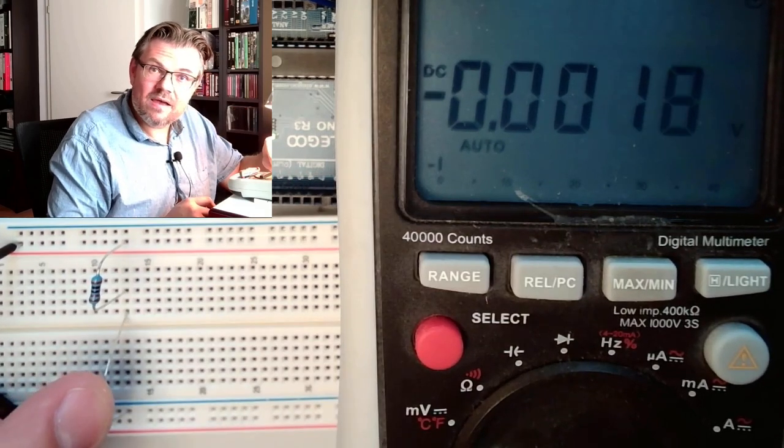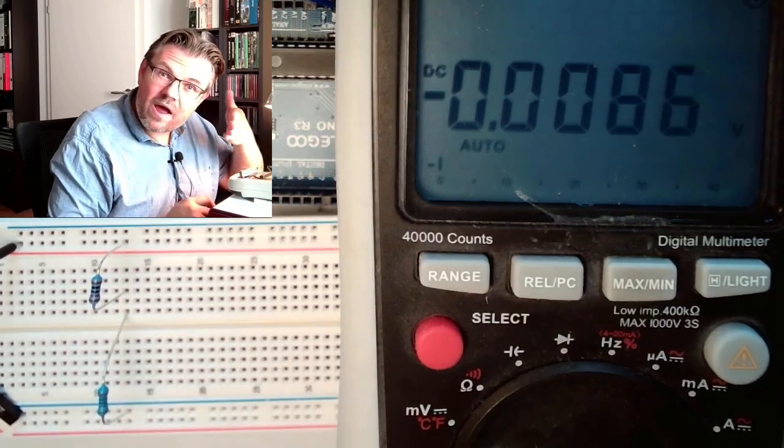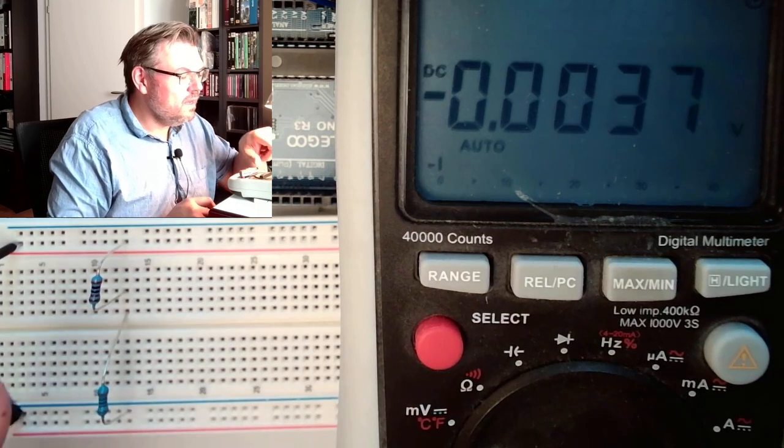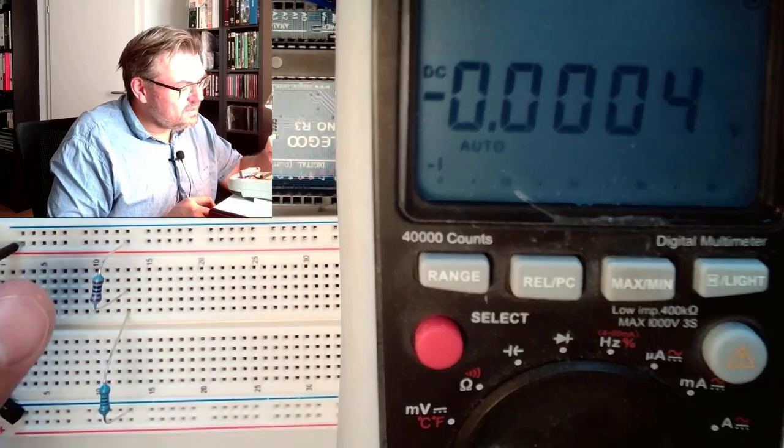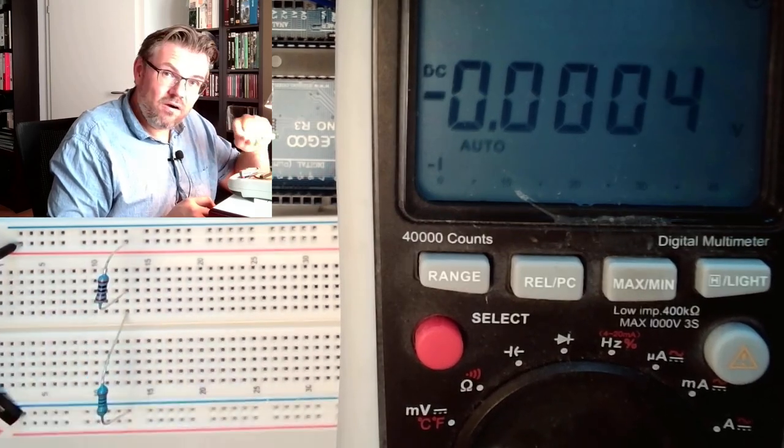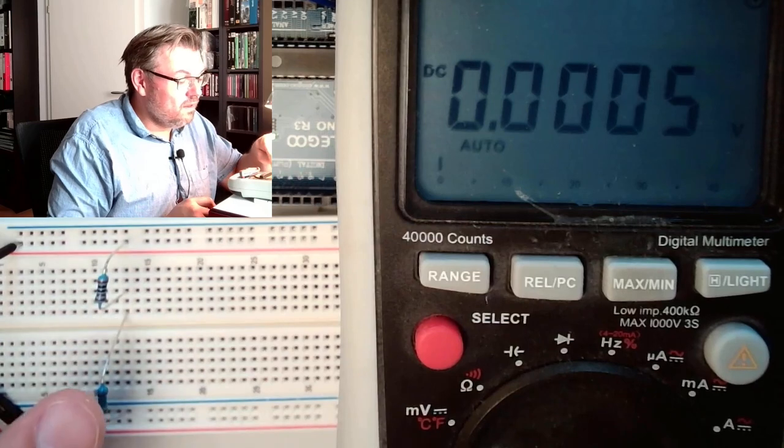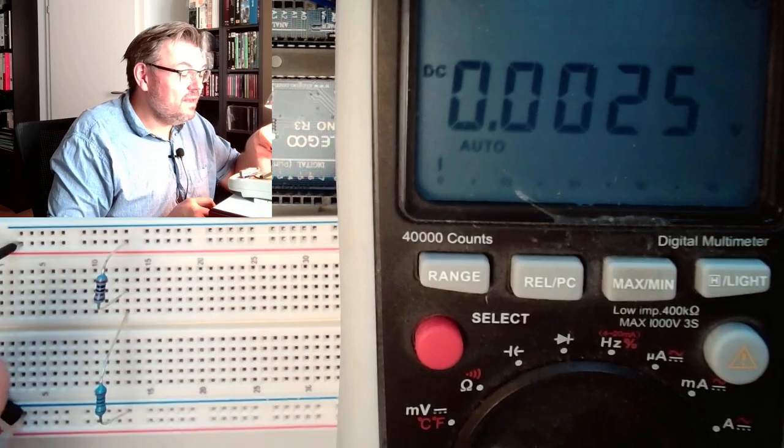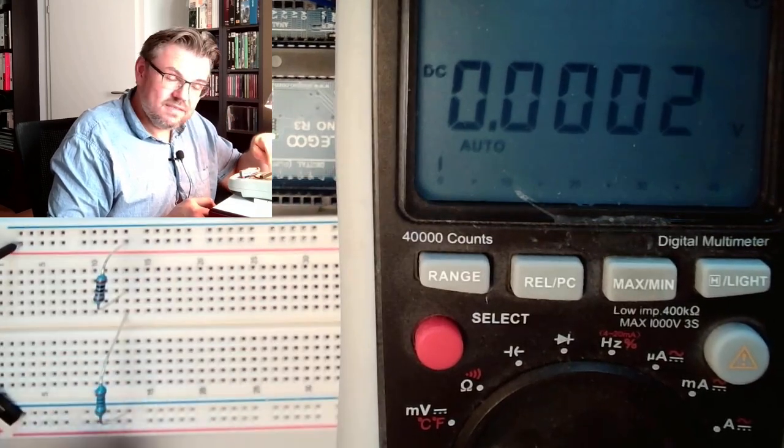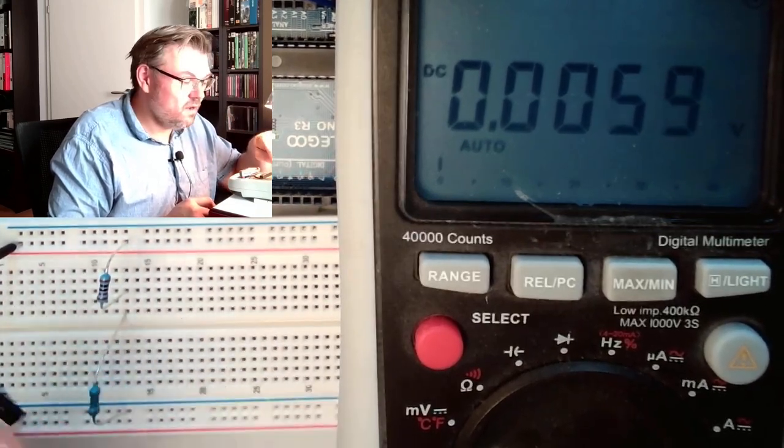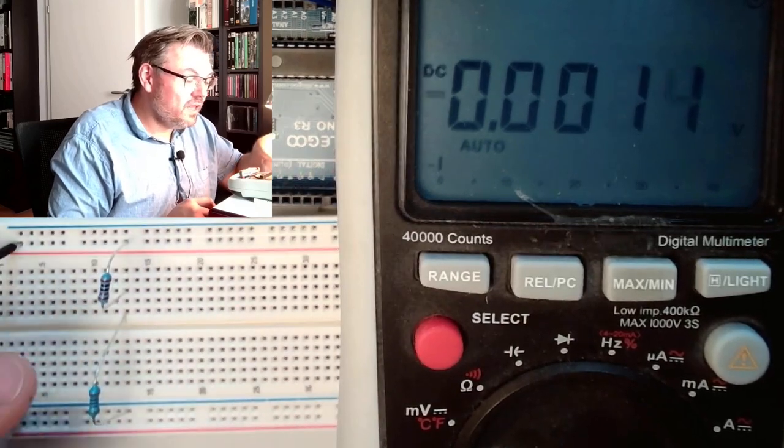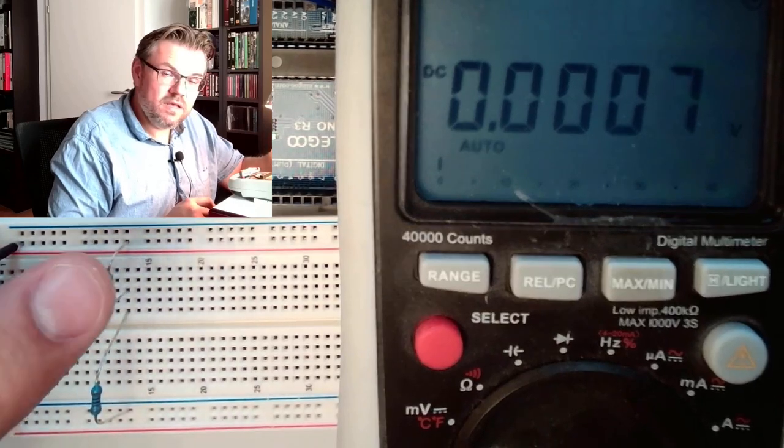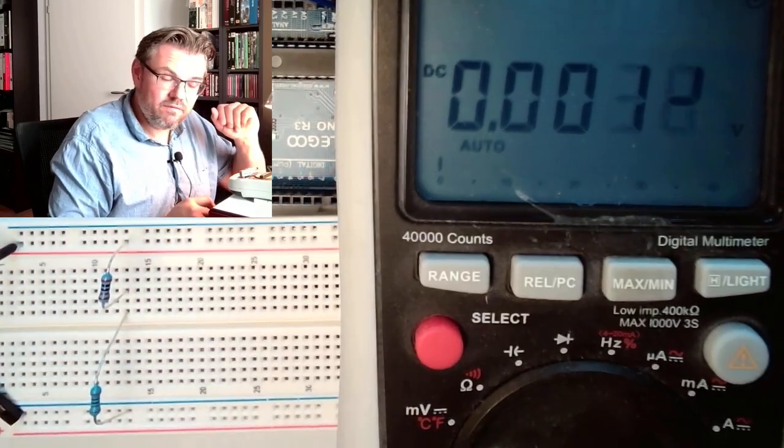And if the resistance is higher, you need higher voltage to drive the same amount of current through. So what it actually means is that the voltages are divided into two parts by these two resistors. And according to the resistor size. 1K, 2K, 1 and 2, the voltage levels will divide. Here is double voltage than here and together they have 5 volts because I applied 5 volts.